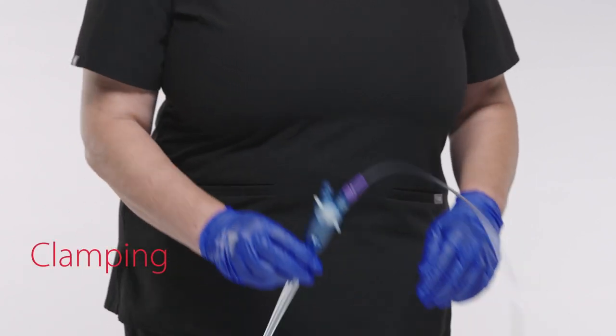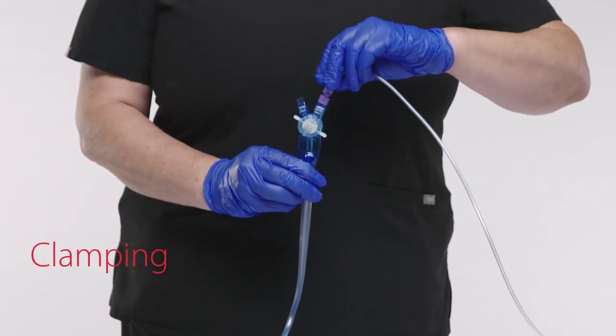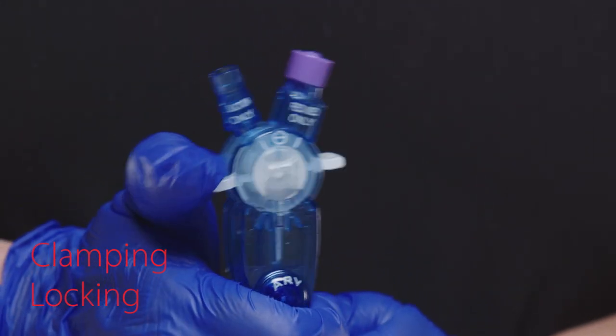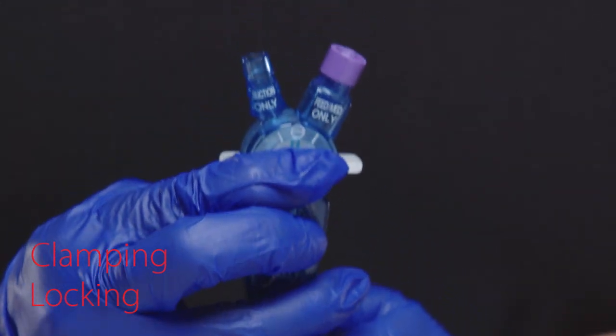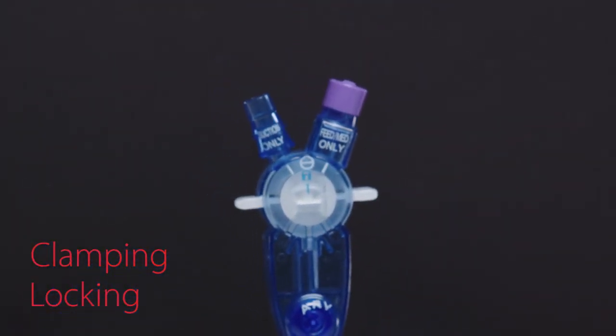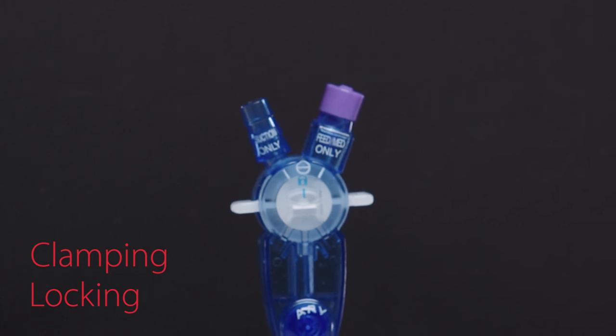Slide the knob to the middle to clamp the tube during a procedure or transportation. To lock, slide the top down at any position to reveal the lock sign. This will lock the knob during any of the various functions of the tube.